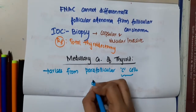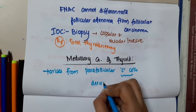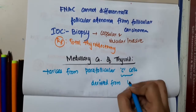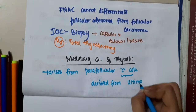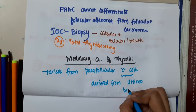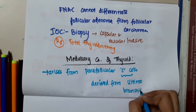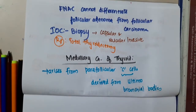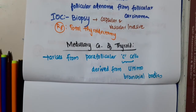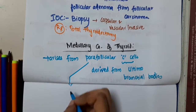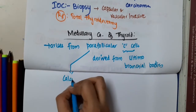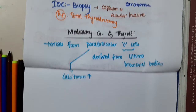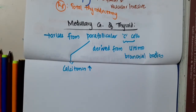These C cells are derived from ultimobronchial bodies. These parafollicular C cells will produce calcitonin, so there is increased calcitonin seen in medullary carcinoma of thyroid.